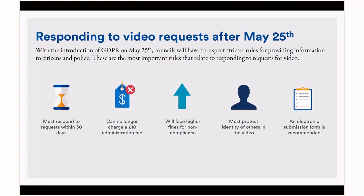There are also higher fines for non-compliance. Where a breach is not reported within 72 hours, or where steps were not taken to ensure systems were GDPR compliant, there are two tiers: two percent of global revenue or ten million pounds, or for more serious breaches, four percent of global turnover or twenty million pounds. You must also protect the identity of others in video — where we have a subject access request, we need to redact the faces of people who are not making that request.